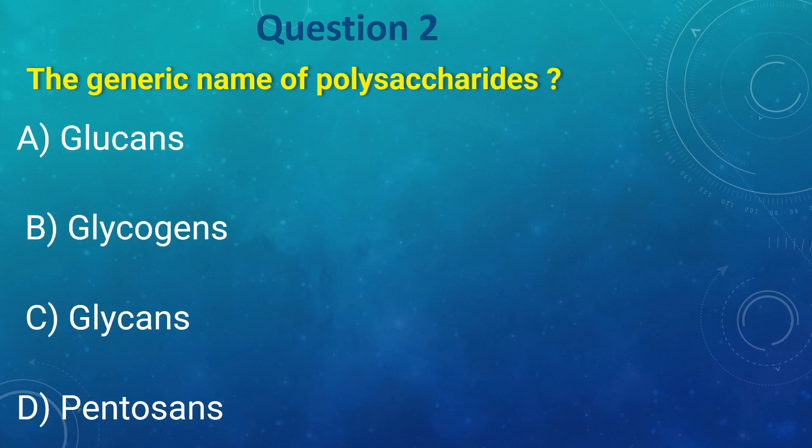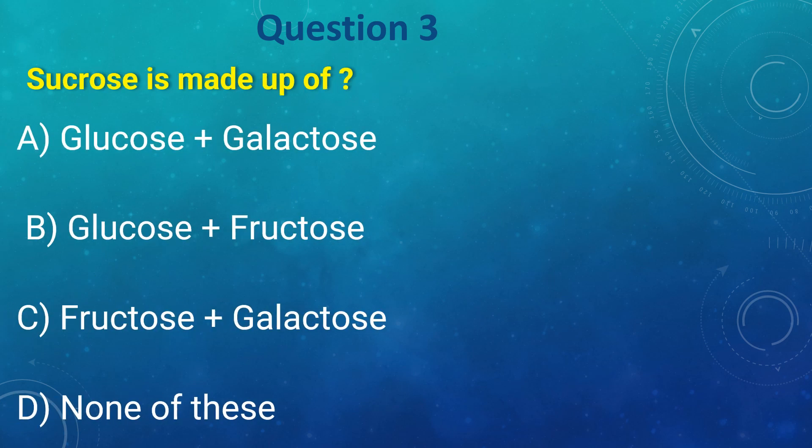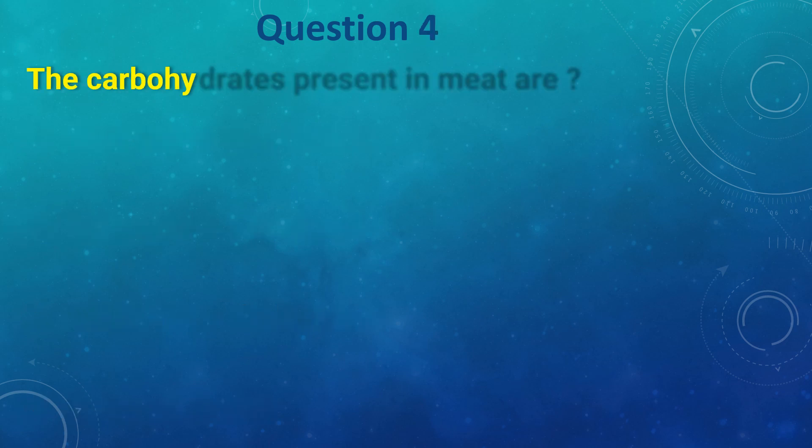a) glucan, b) glycogen, c) glycan, d) pectins. The answer is c) glycan. Sucrose is made of: a) glucose plus galactose, b) glucose plus fructose, c) fructose plus galactose, d) none of these. The answer is b) glucose plus fructose.